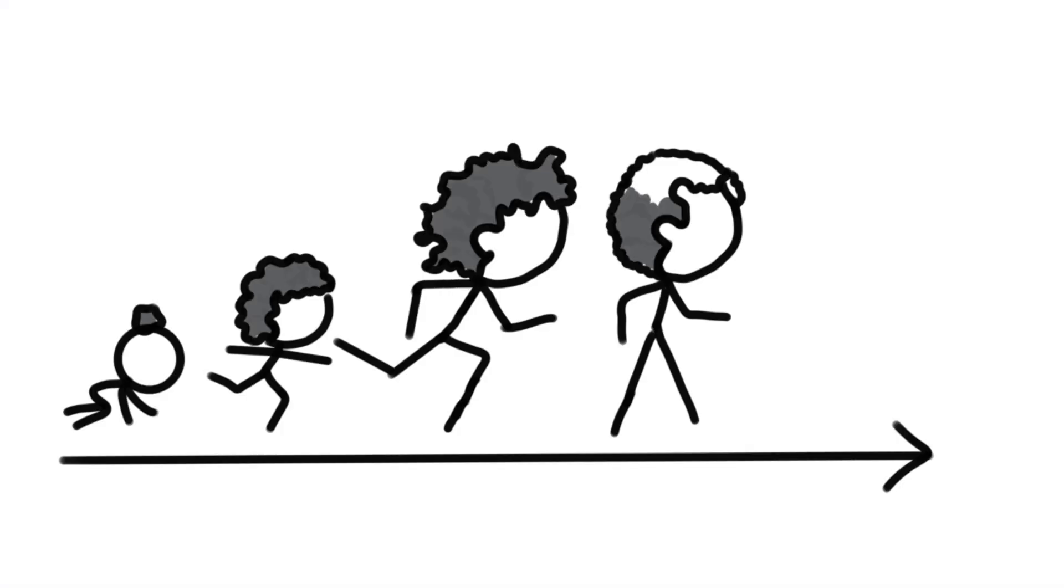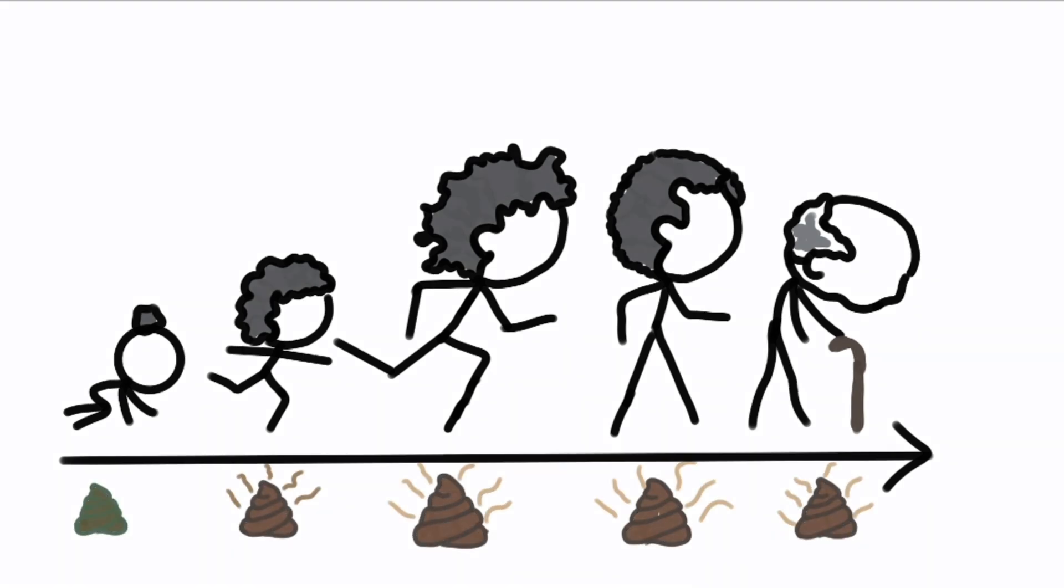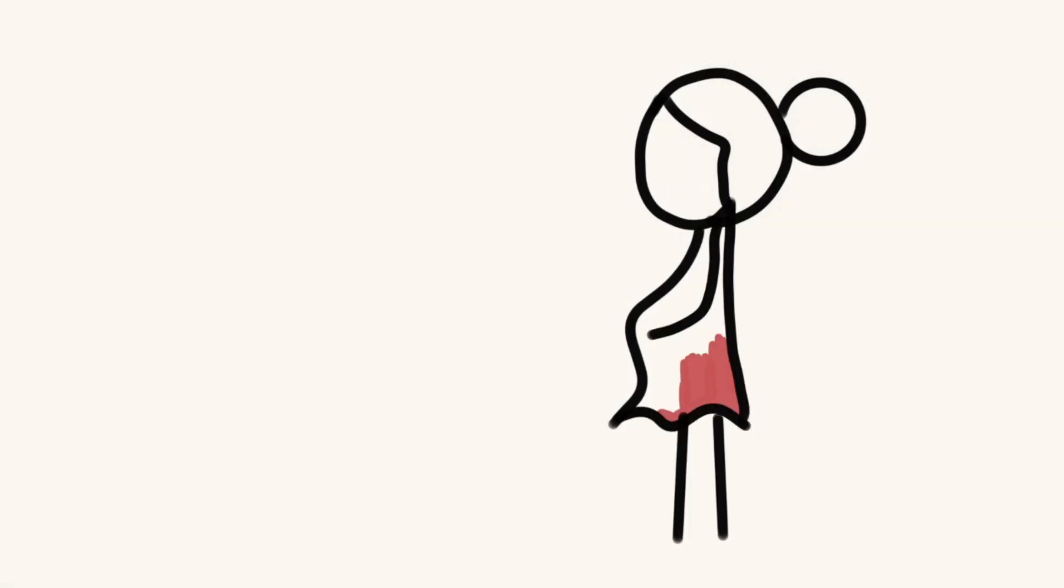Unlike most of the poop in our life, the brown gross and smelly ones, our first poop isn't brown or smelly. Instead, it is much of a dark olive green color and is quite viscous and sticky.